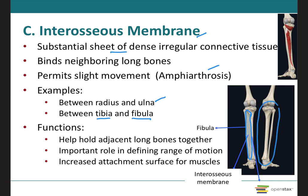The strong connective tissue sheets not only hold adjacent long bones together but also define the range of motion between neighboring bones and provide an increased attachment surface for muscles that produce movements of the digits of the hand — in the case of the forearm interosseous membrane — or of the foot for the membrane between the fibula and tibia. For example, the tibialis posterior muscle in the leg utilizes the interosseous membrane for attachment.